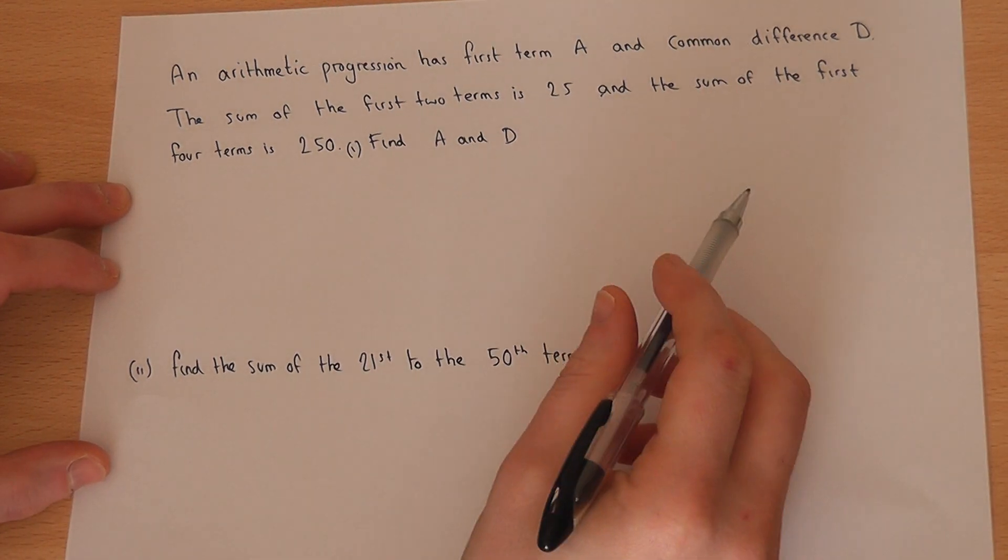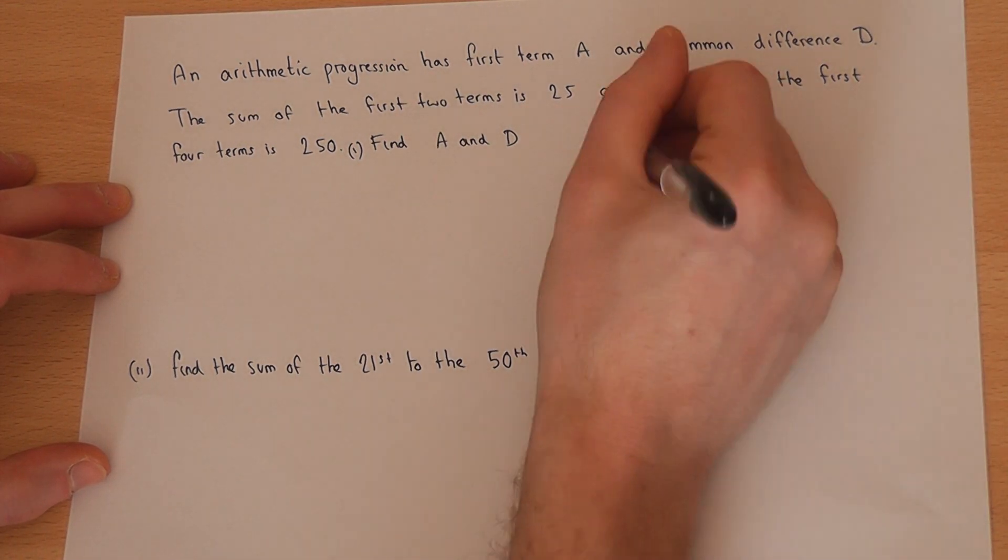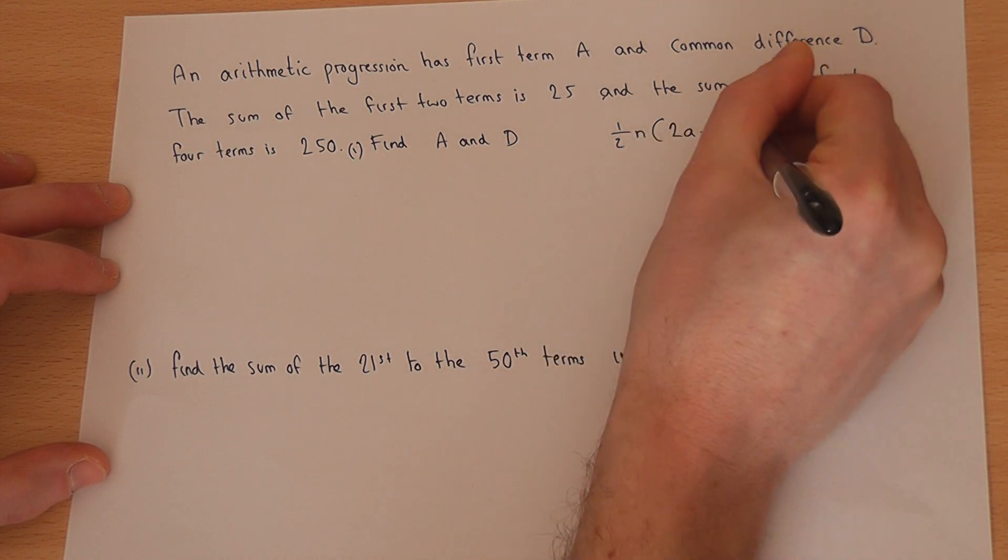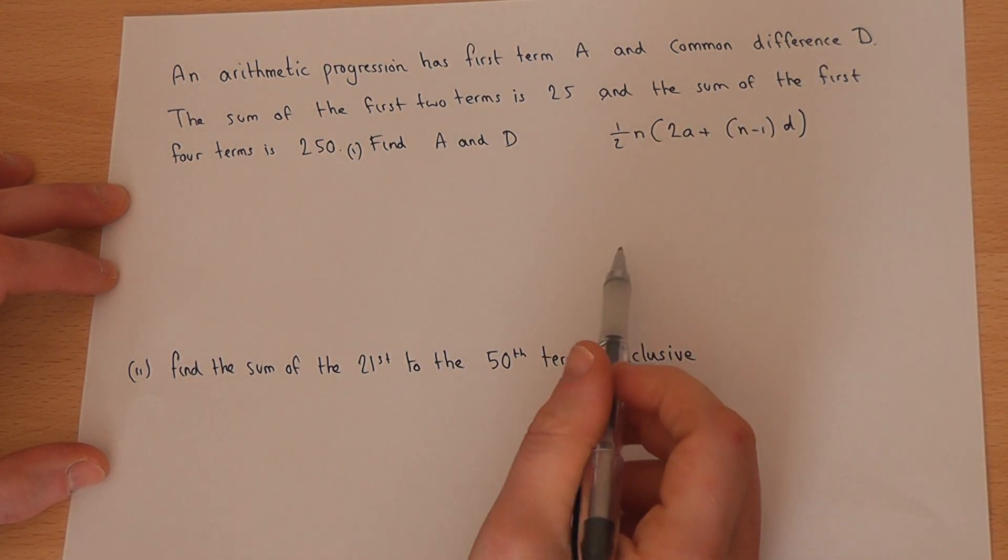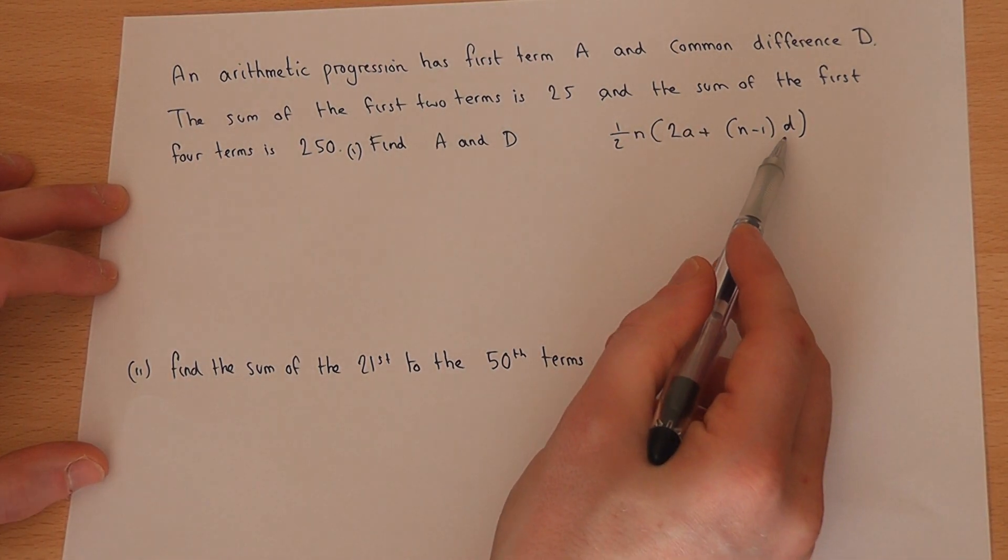Now we know that the general formula for the sum of n terms in an arithmetic progression is 1 half n times 2a plus n minus 1 times d, where a is the first term and d is the difference.